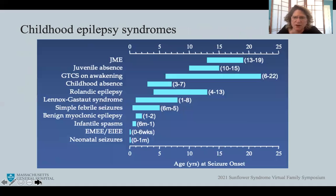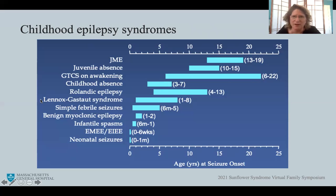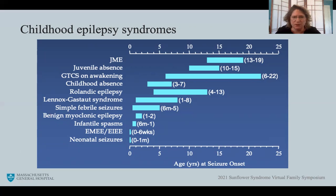This graph shows many of our childhood epilepsy syndromes, with the x-axis showing age of onset and the y-axis naming several syndromes. Many of these syndromes are benign — children are otherwise healthy with normal development — such as childhood absence, one of our most common. Others, like Lennox-Gastaut, are not so benign, with significant cognitive impairment. We'd also like to point out that there is often a family history of childhood absence or juvenile myoclonic epilepsy in families of children with Sunflower Syndrome.